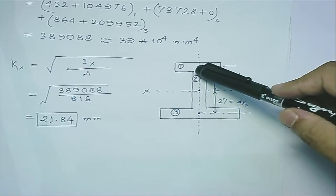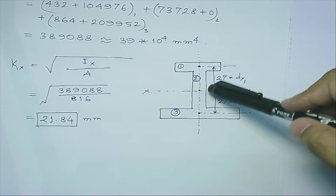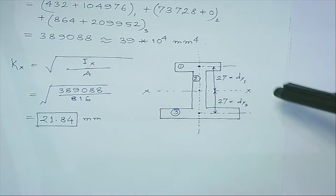Remember, for the second area, the centroidal axis coincides with the x-axis, so we do not have any distance to transfer.